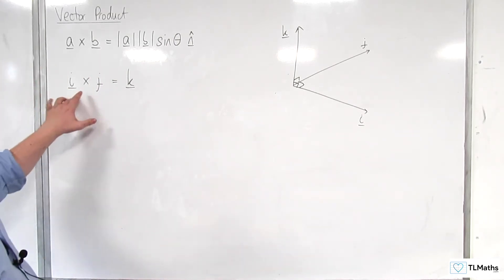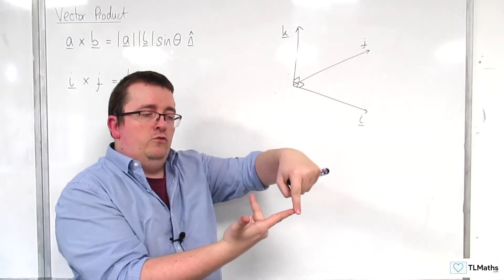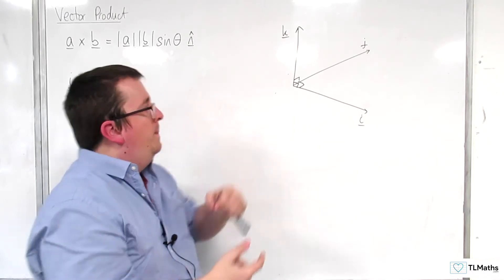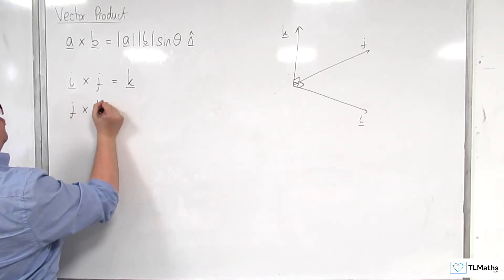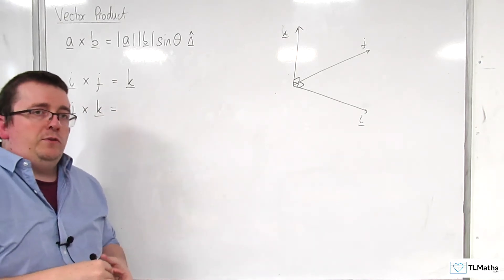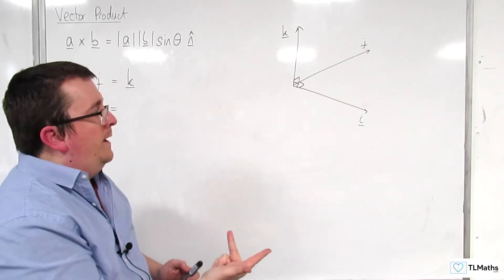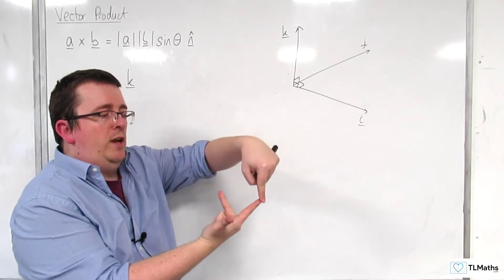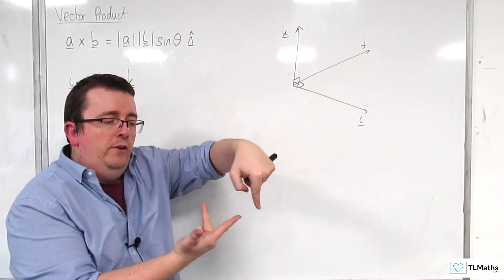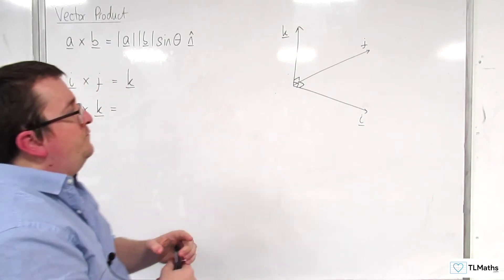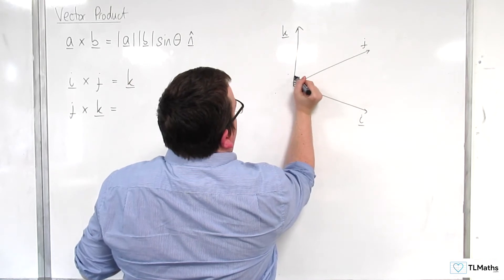It makes sense then that i cross j is equal to k. Using the right-hand rule, if we've got i cross j equal to k, we can then think about j cross k. Using the right-hand rule, you can follow this around: i cross j is k, and j cross k is i. You keep going round in that same anti-clockwise motion. So if we go from j to k, we get i.